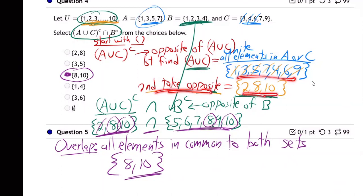Did that, and then take the opposite because it's A union C complement. So that was two, eight, and ten. Brought that down over here, A union C complement. And then we needed B complement. So we took B and took the opposite. And then finally, we had to overlap what was in the first set and the second set, which was just eight and ten.